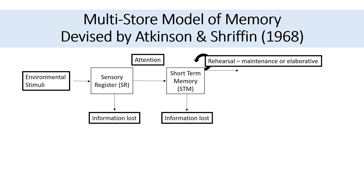There are two types of rehearsal. There's maintenance rehearsal, which keeps information in short-term memory, and that might eventually pass into long-term memory. More useful is elaborative rehearsal — this is where we give the information in short-term memory meaning, or we semantically encode it, and that moves information from short-term memory into long-term memory. We might say that our short-term memory is coded acoustically — that is, in sounds.